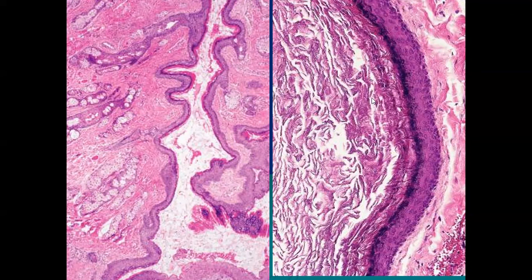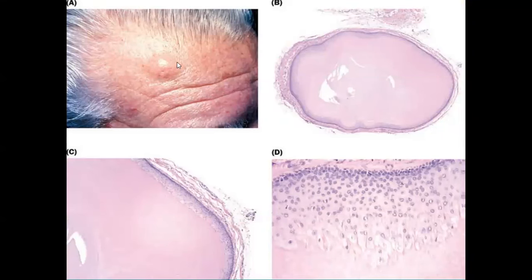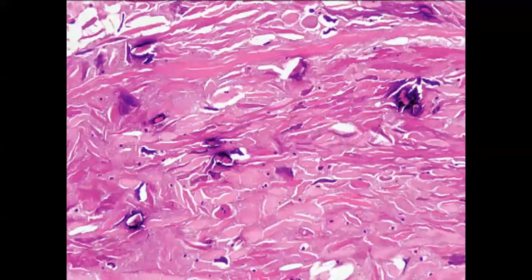A sebaceous cyst or steatocystoma multiplex is a soft cyst with multiple sebaceous glands in its wall. A pilar cyst shows pilar (homogeneous) keratinization and lacks a granular layer — this can be seen in a cystic lesion on the forehead. Calcinosis cutis shows bluish irregular calcium deposits within the collagen.